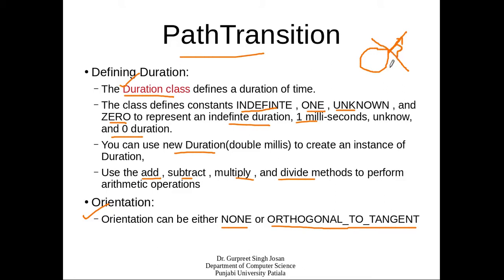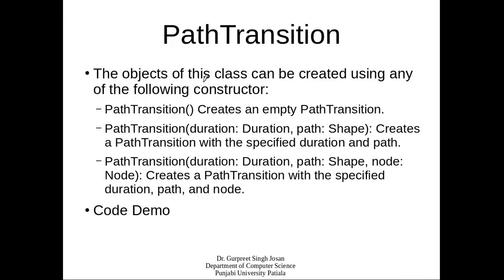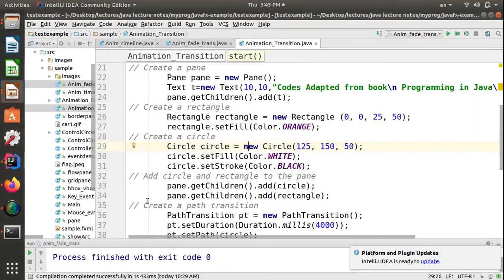At every point along the circular path, the tangent direction changes, and the object's orientation follows the orthogonal to that tangent. Objects of PathTransition can be created using a default constructor or parameterized constructors accepting duration and path, or duration, path, and node. Let's see a simple example to create a PathTransition, adapted from the book Programming in JavaFX by Daniel Liang.